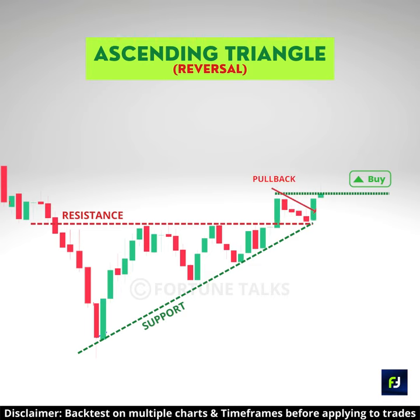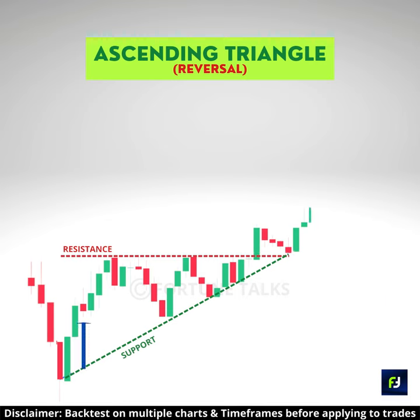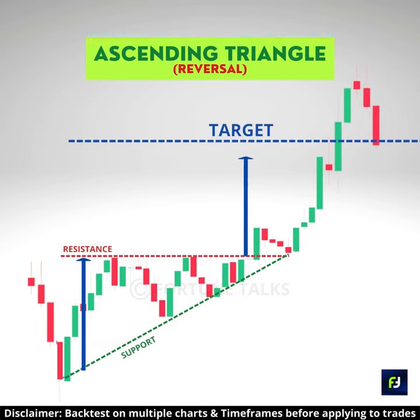Enter a long position following a high volume breakout above the breakout candle, or after a pullback to the resistance after breakout. The stop loss can be placed below the recent swing low. To set the target, measure the distance from the lowest point of the ascending triangle to the flat resistance line and project it upward from the breakout point.